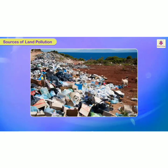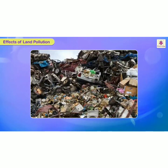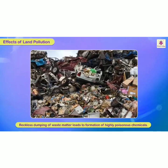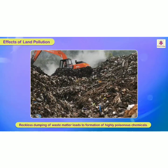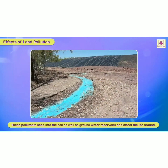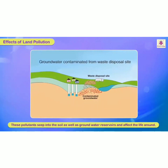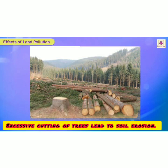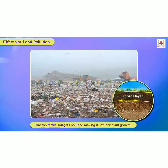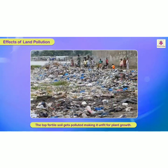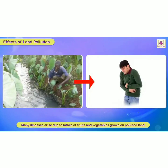Now we are going to study the effects of land pollution. Dumping of waste matter leads to formation of highly poisonous chemicals. These pollutants seep into the soil as well as groundwater resources and affect the life around. Pollutants from the land seep through the soil and enter the groundwater, polluting it too. Excessive cutting of trees — deforestation — also leads to soil erosion. Because of soil erosion, the top fertile soil gets polluted, making it unfit for further cultivation or plant growth. Also, many illnesses arise due to intake of fruits and vegetables grown on polluted land.